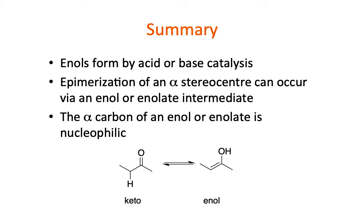In summary, what we've seen in this video: enols can form by acid or base catalysis. Epimerization of an alpha stereocenter can occur via an enol or enolate intermediate.